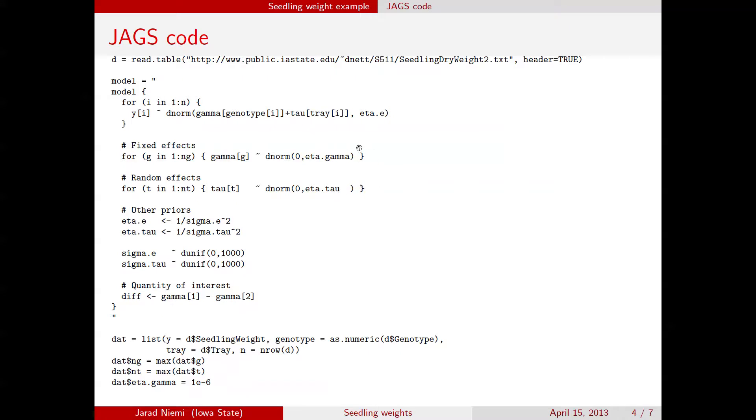The only difference between these two is that we're going to define a specific value for eta dot gamma, thus making gamma here, our genotype effect, a fixed effect. Here for eta tau, we're actually going to be learning eta tau from the data set itself, and therefore, tau is a random effect.